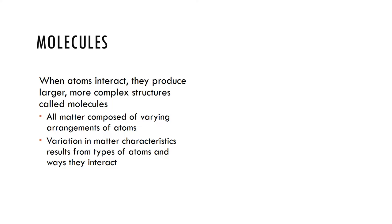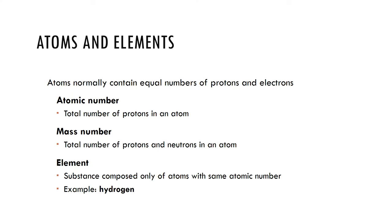When atoms interact they can produce larger, more complex structures called molecules. All matter is composed of varying arrangements of atoms. Some key terms: the atomic number is the number of protons in a nucleus; the mass number is the mass of the protons and neutrons combined. Mass numbers of atoms of an element are not all identical; atomic weight is the average mass number of all isotopes.